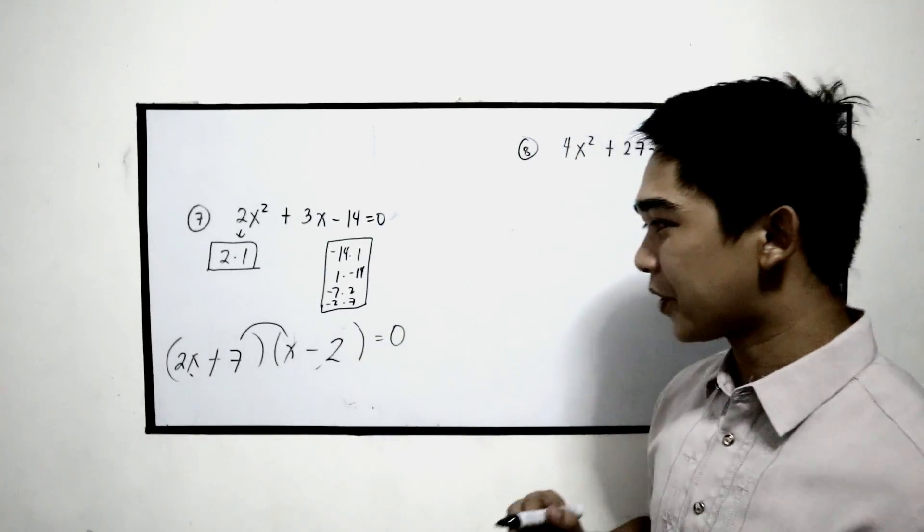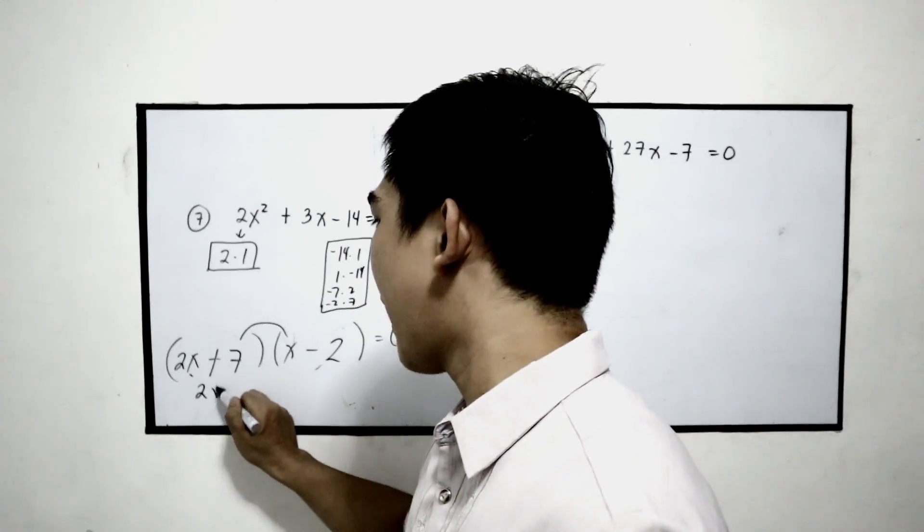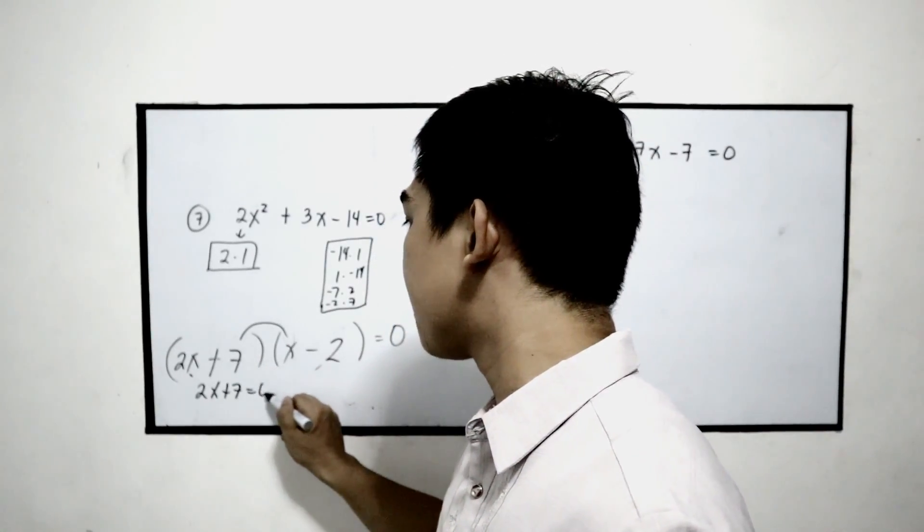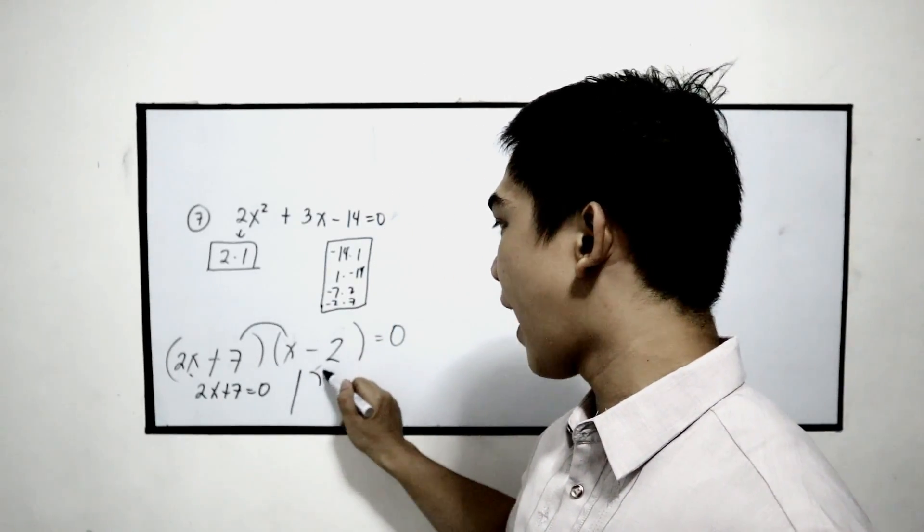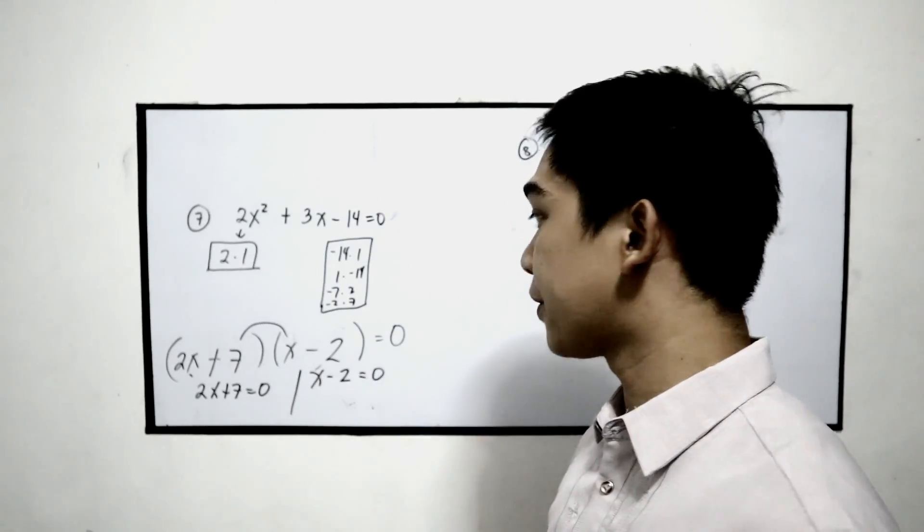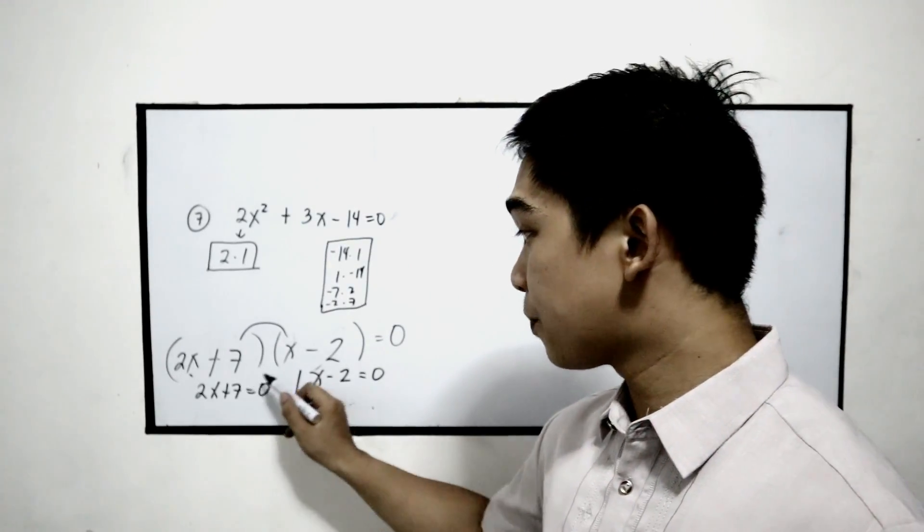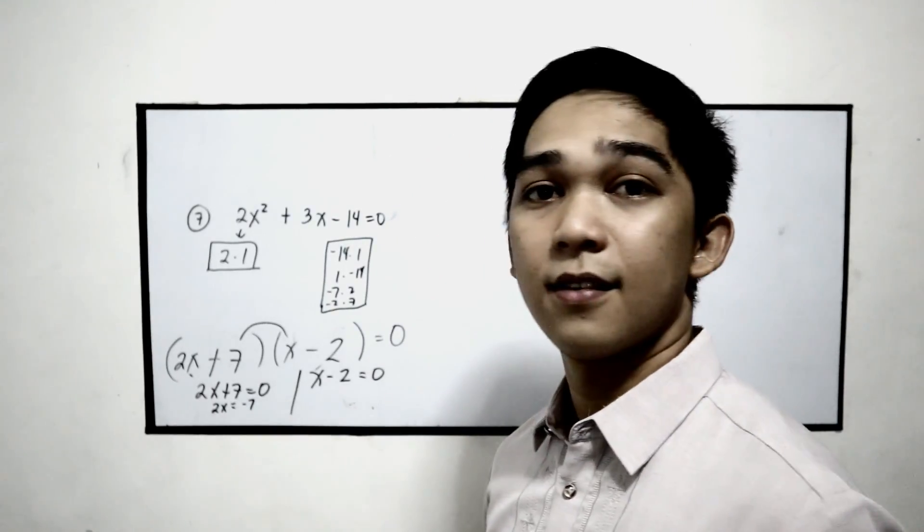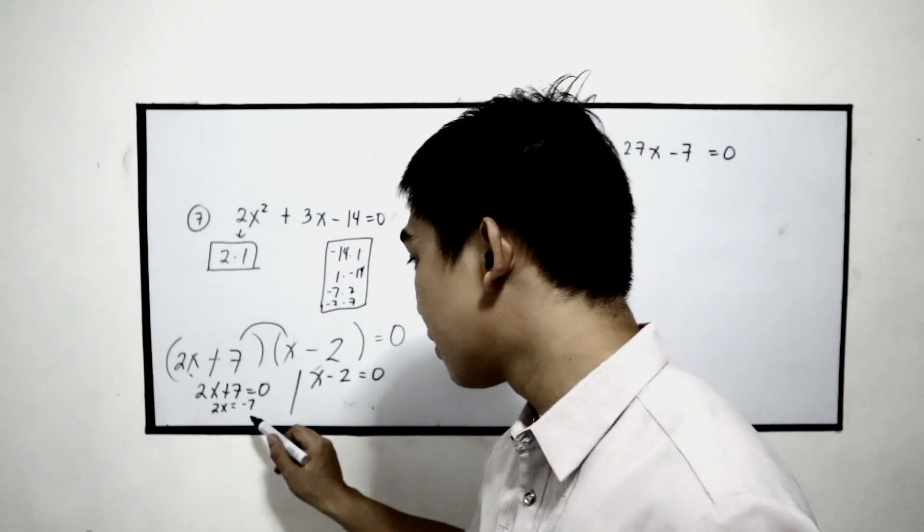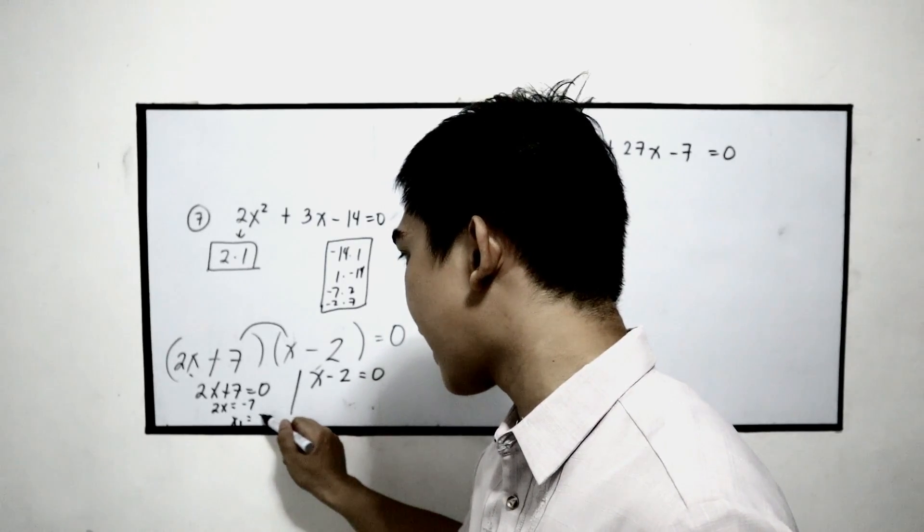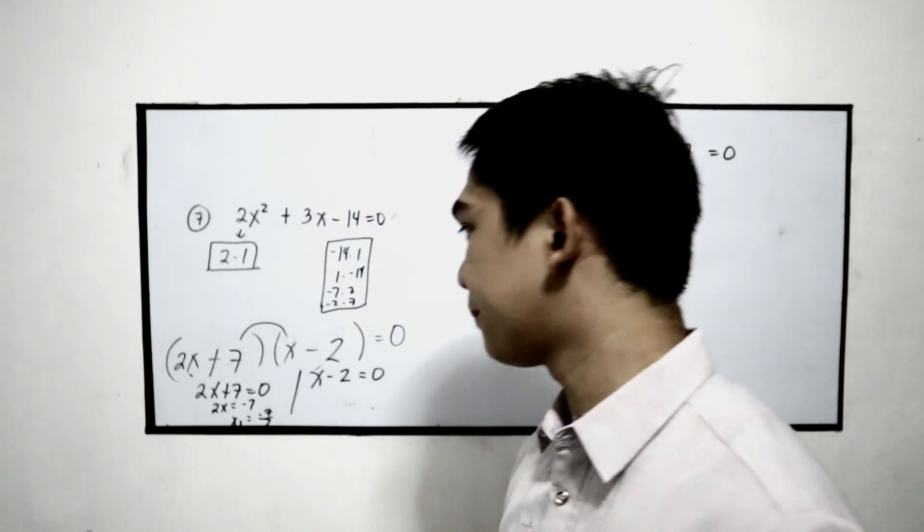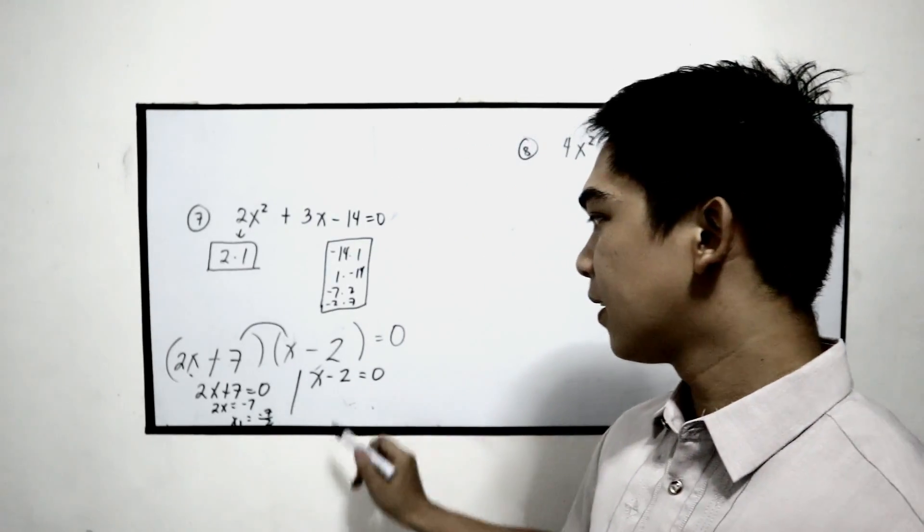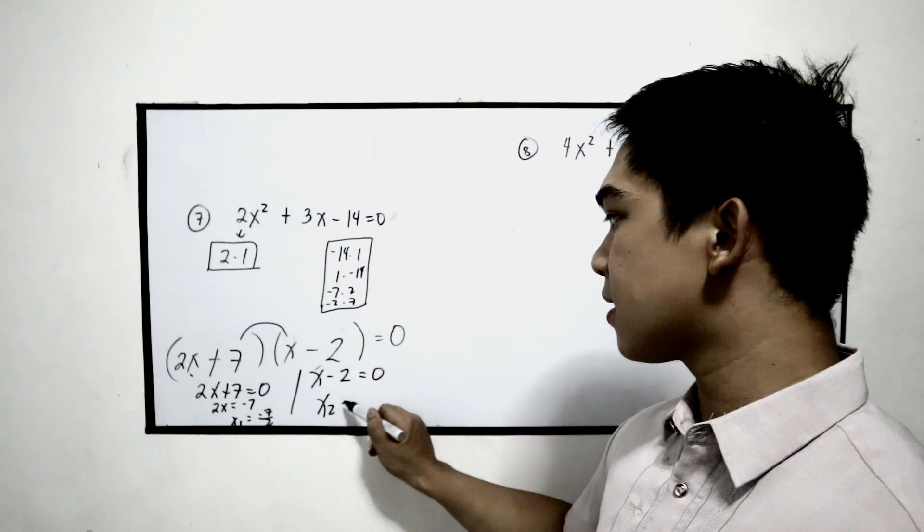Now, equate to 0. 2x plus 7 is equal to 0, and x minus 2 is equal to 0. Transpose, 2x is equal to negative 7. Divide by 2, so x sub 1 is negative 7 over 2. Next, x sub 2 is 2.